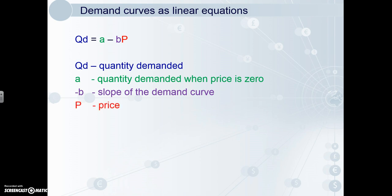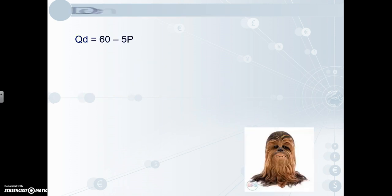And P is price. You'll need to know how to plot the demand curve, so we'll do that now. The example in the syllabus is QD equals 60 minus 5P, so we'll use that and say that is the demand for Chewbacca masks.